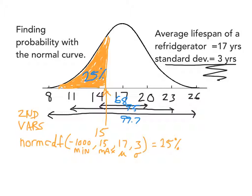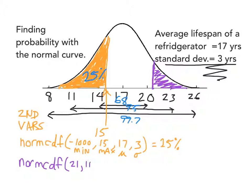About 25% of that curve is actually shaded. We could also use the graphing calculator to figure out the percentage of refrigerators that last longer than a certain amount. Suppose we're interested in the percentage of refrigerators that last 21 years or longer — that'd be a very long lifespan. We use normal CDF again, this time from 21 to 1,000 years. We just pick a ridiculously large number for the maximum. You end up getting about 9% on your calculator, which matches the picture pretty well.